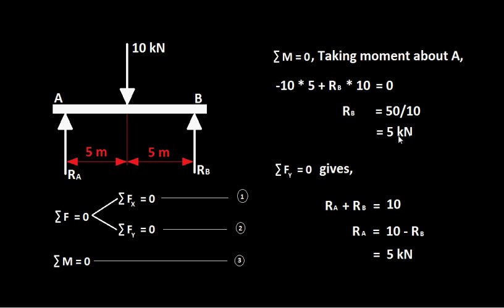We have one more useful equation. Since there are no horizontal forces, the summation Fx = 0 is not needed here. For vertical equilibrium, summation of forces in the y direction equals zero: RA + RB = 10 kilo Newton. Since RB = 5 kilo Newton, RA = 10 − 5 = 5 kilo Newton.